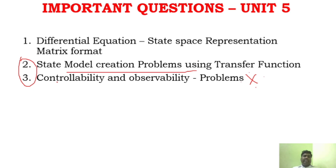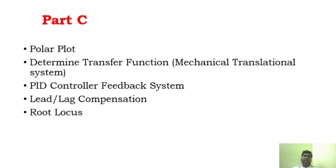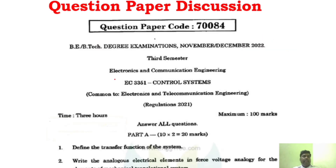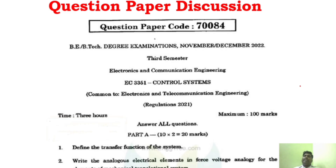Now you are very clear about the important questions. For Part C, the repetitive and important areas are: polar plot, transfer function, PID controller, unity feedback system, lead-lag compensation, and root locus. We will now move to question paper discussion. As mentioned, the video description has a link to five years of previous question papers — that is more than enough, covering 6 to 7 questions per paper.